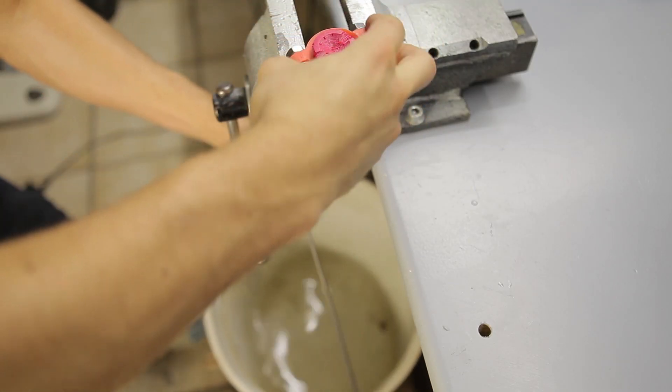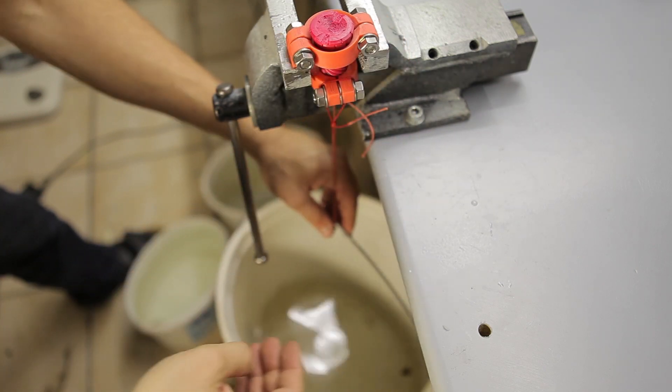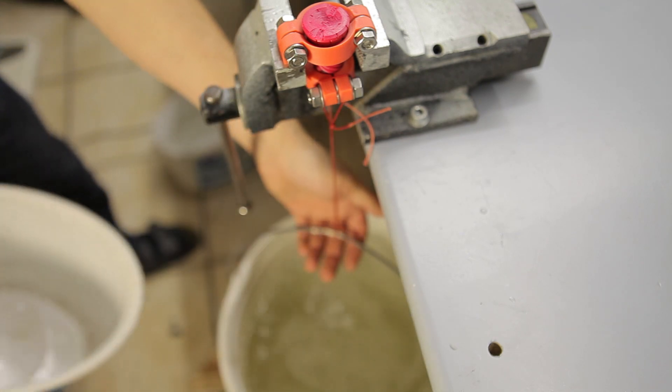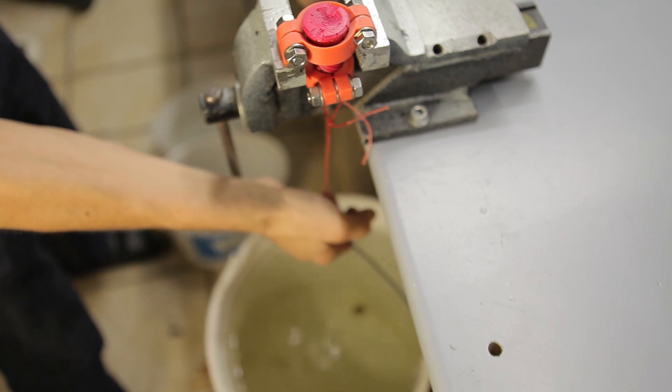Next up was the PLA part, and that got strapped into the exact same torture device and loaded and destroyed in the exact same manner. And again, like the Formlabs part, this part did not fail until the bucket was full.